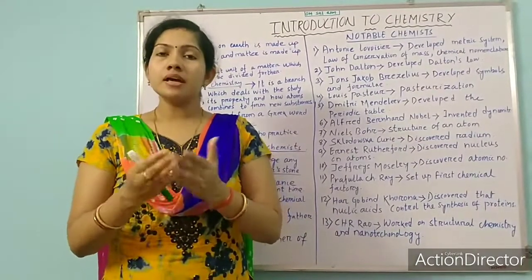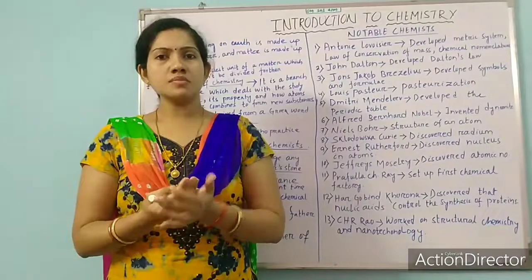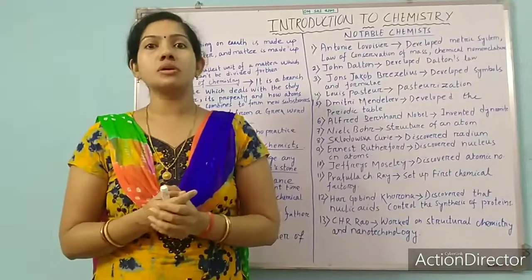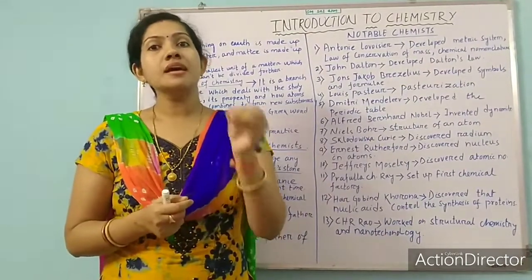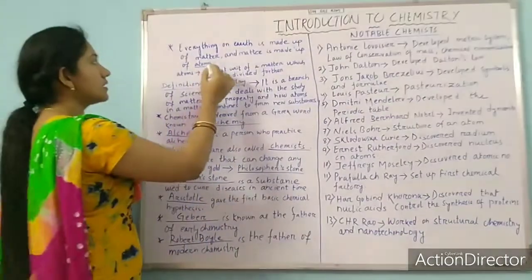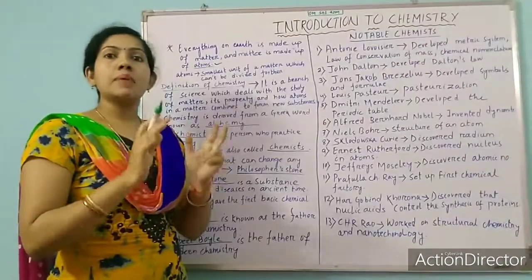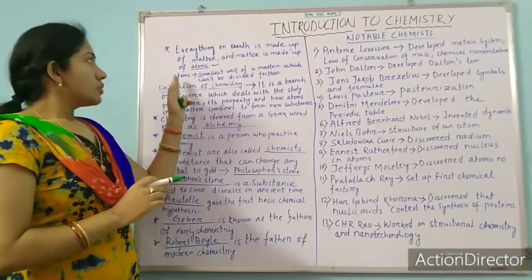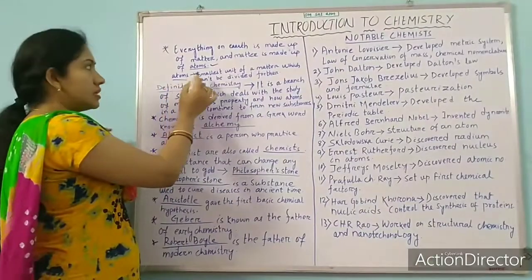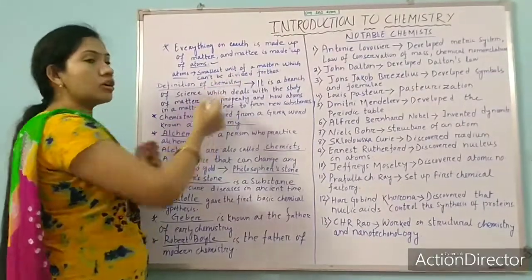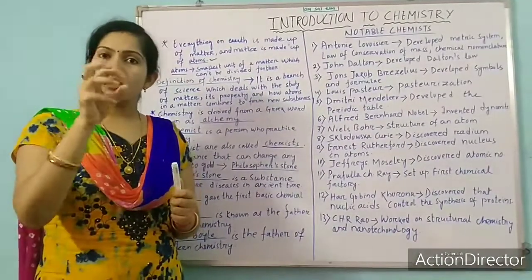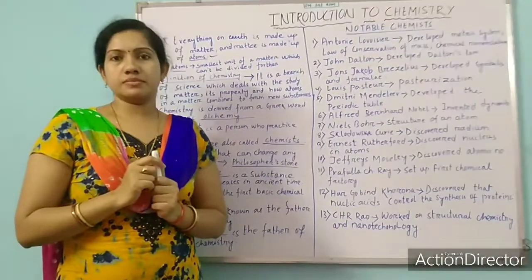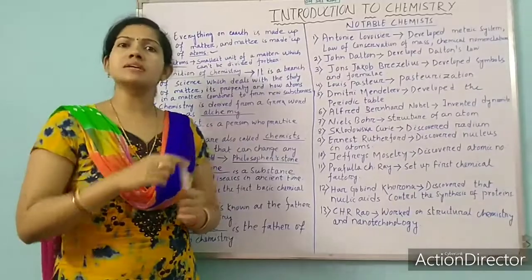Just giving that as an example — like that, every matter around us consists of some small particles, and that smallest particle of a matter is known as an atom. Atoms are the smallest particle of a matter. Here I have written the definition of atom: the smallest unit of a matter which cannot be divided further. Beyond that, we cannot break it — that is the last smallest particle of a matter.